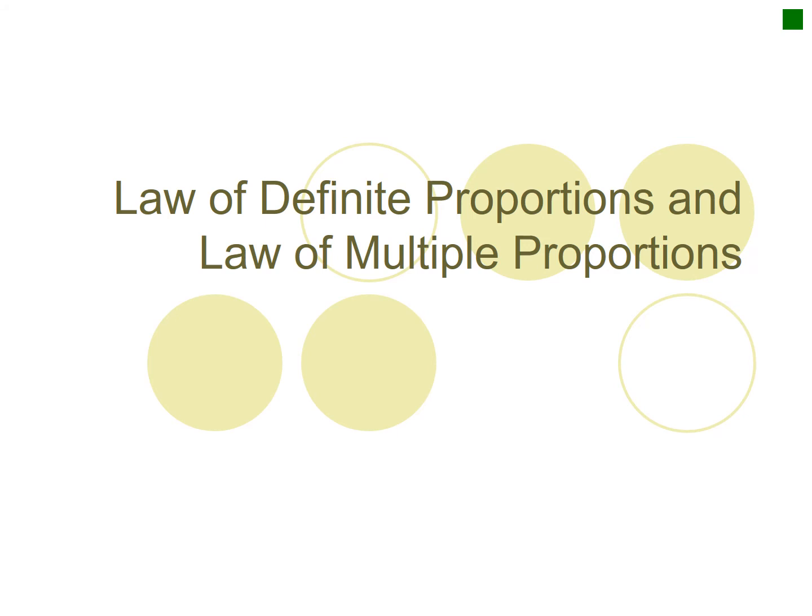Tonight, what we're going to be talking about is the law of definite proportions and law of multiple proportions. These were very early discoveries about compounds and relationships within compounds. We're talking about the early 1800s, late 1700s, when chemistry was just a new field of study. These were the two laws that really helped define the creation of atoms, the idea of an atom, and the idea of a compound.